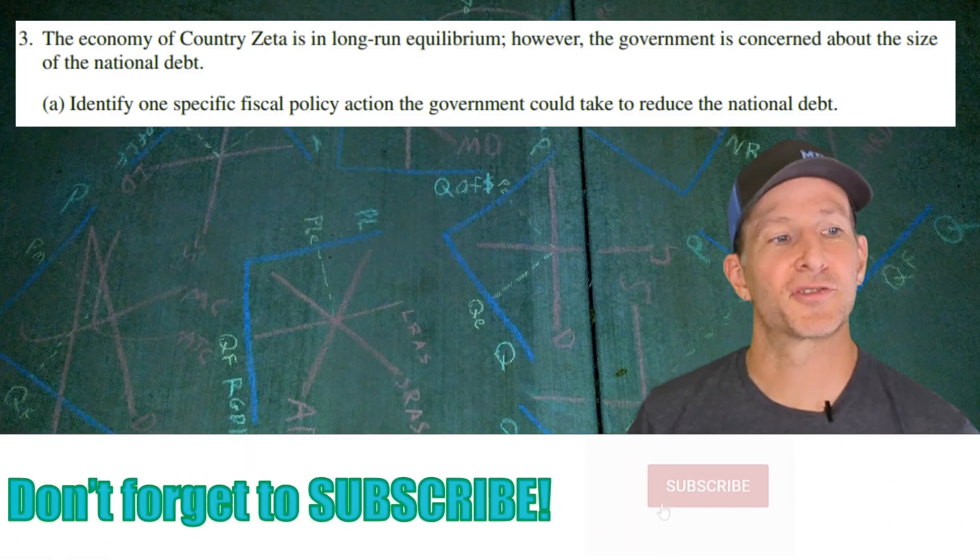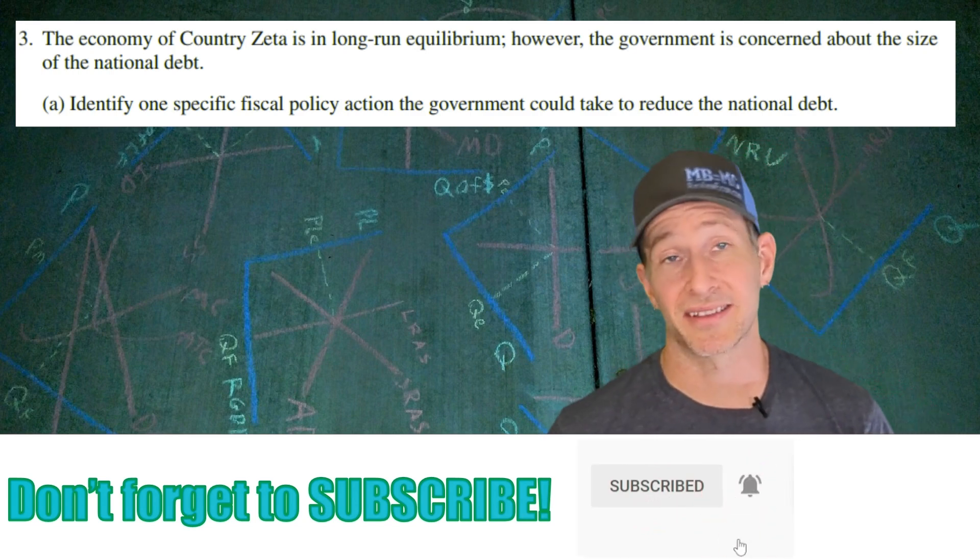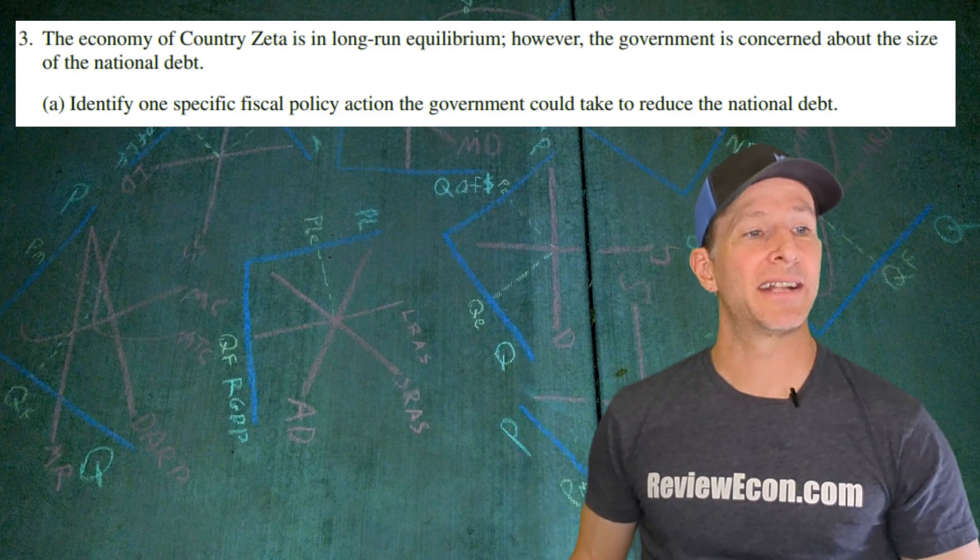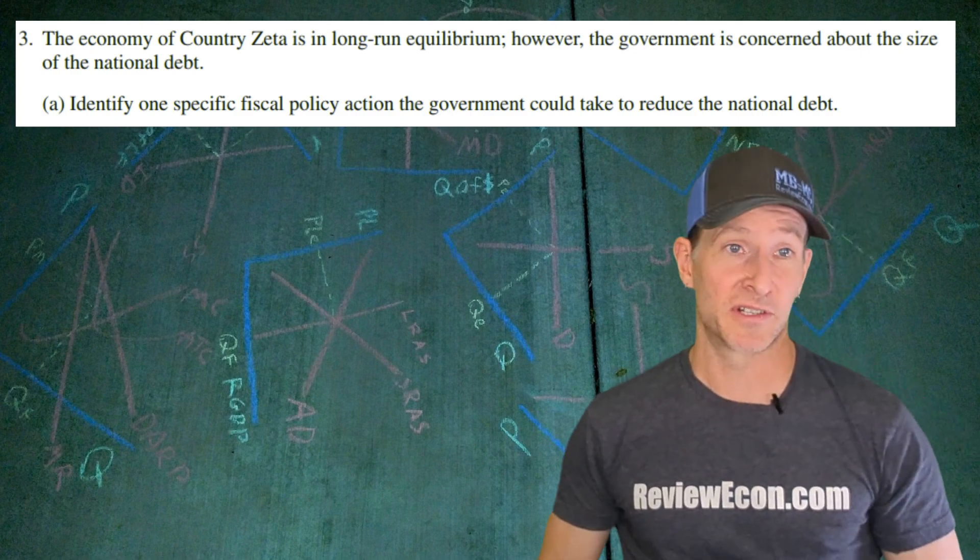Now, this question starts off with the country of Zeta. They are in long-run equilibrium. However, the government is concerned about the size of the national debt. For part A, we're going to identify one fiscal policy action that the government could take to reduce the debt.